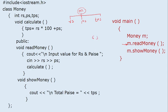If we input value 6, then enter key, then 30, then enter key — value 6 will be given to RS and value 30 will be given to PS. Since we are calling read money with respect to M, RS and PS are considered from object M. Then calculate will execute the member function calculate, which will calculate total paise from rupees and paise. These member variables are considered from the calling object.